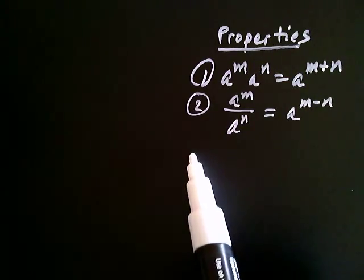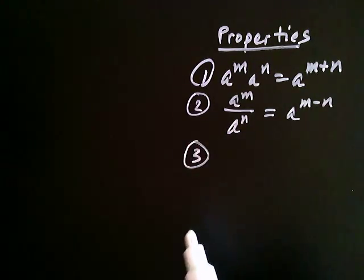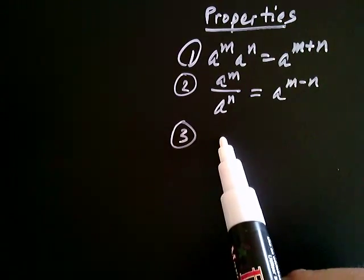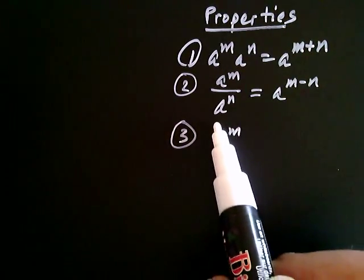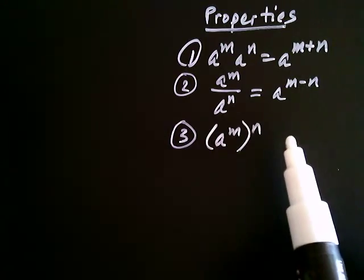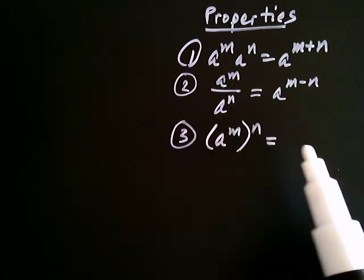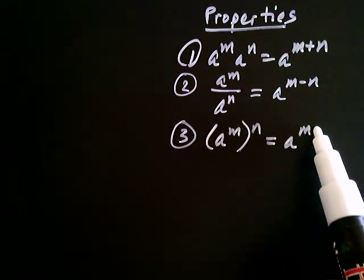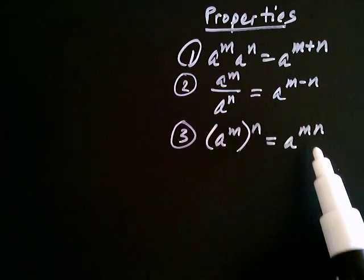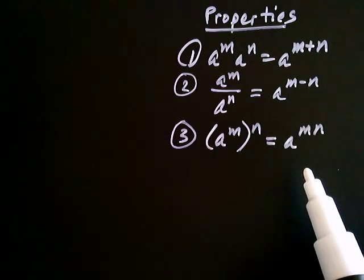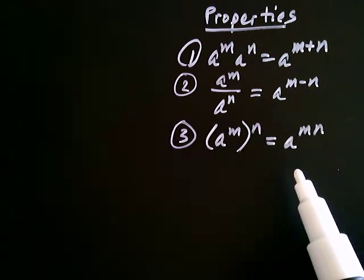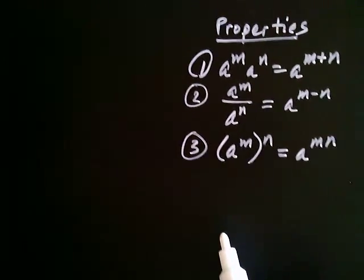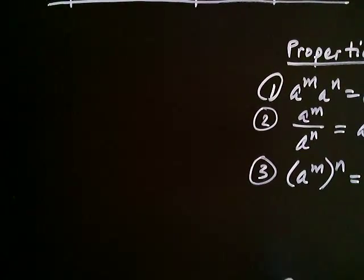The third property is when you have an exponential expression raised to a power — so a to the m raised to the n. In that case, you multiply the exponents, so you get a to the m times n, which is written as mn. We have two more properties to talk about in this video, and let's do an example to discover what they are.